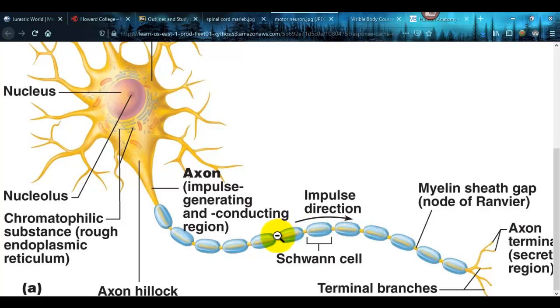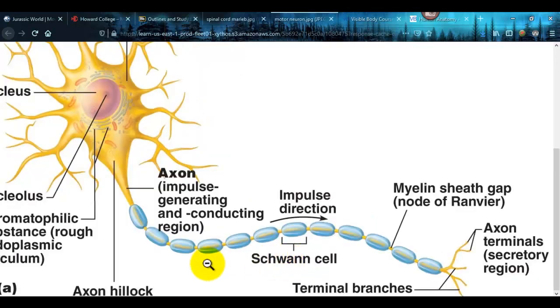So what you have in the gaps, these areas between the Schwann cells, those are called the nodes of Ranvier. And basically it's the part that's not myelinated.